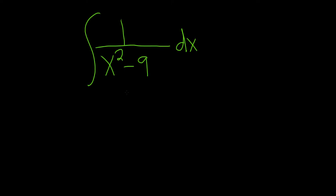Okay, so we have to integrate this indefinite integral. The idea here is to realize that we can factor x squared minus 9. So we can write it as 1 over x minus 3 times x plus 3. It's the difference of squares.